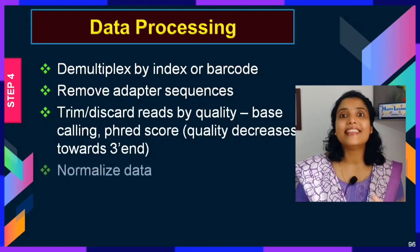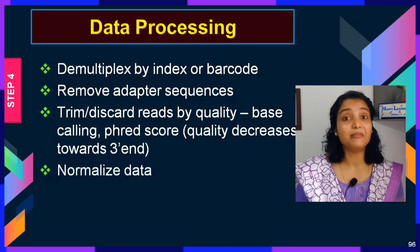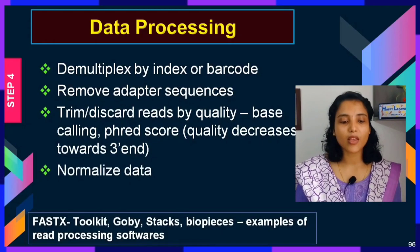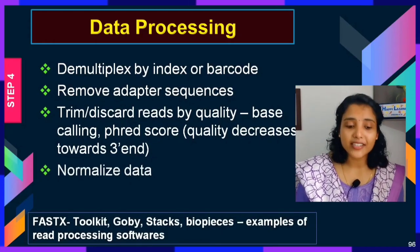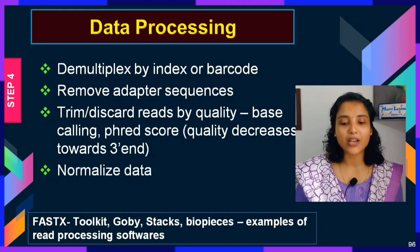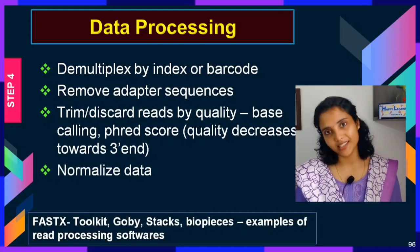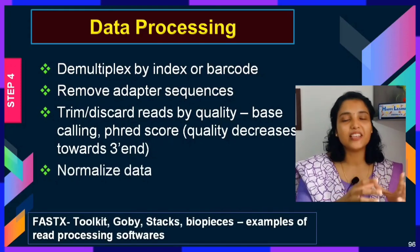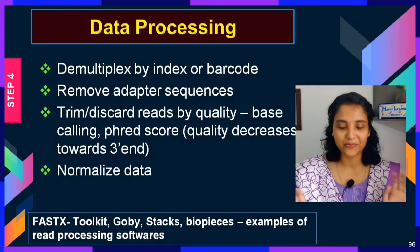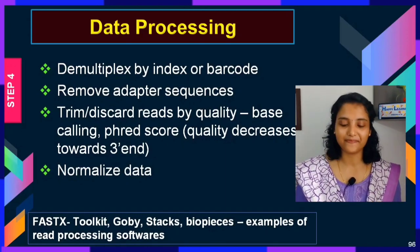Then we need to normalize our data. FastX Toolkit, GATK Stacks, and BioPieces are examples of pre-processing softwares that carry out all these steps before we actually go into sequence assembly.